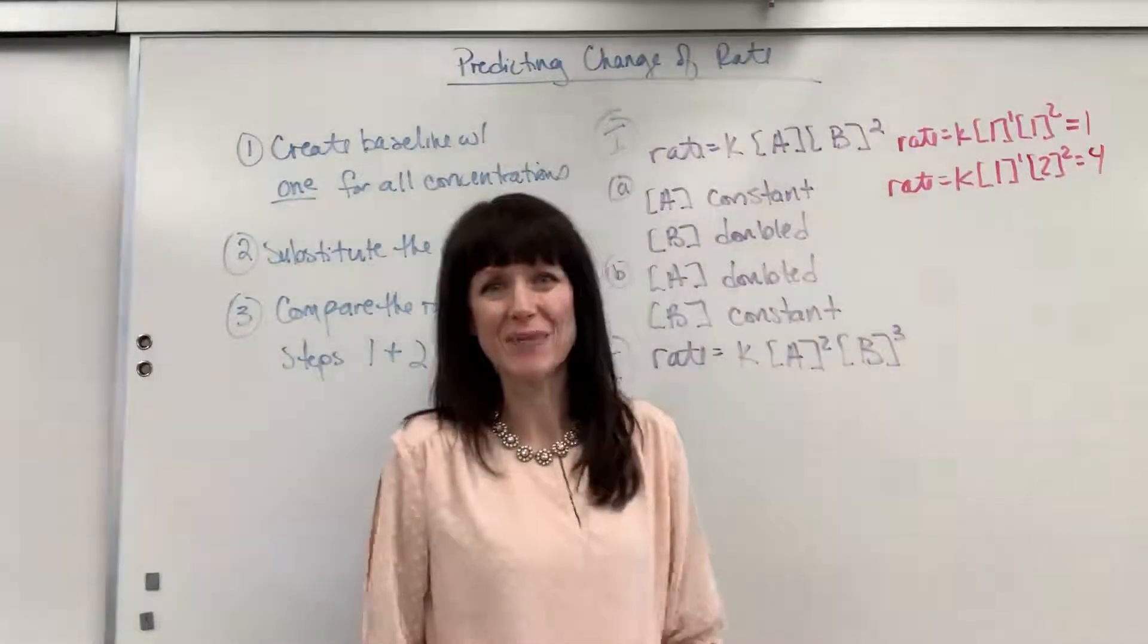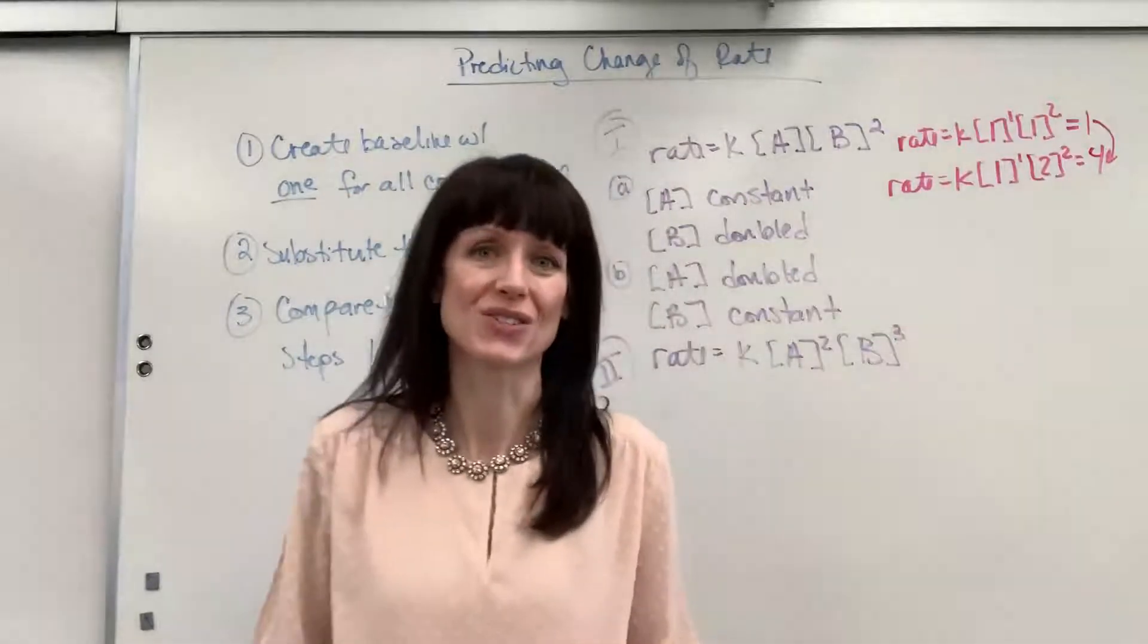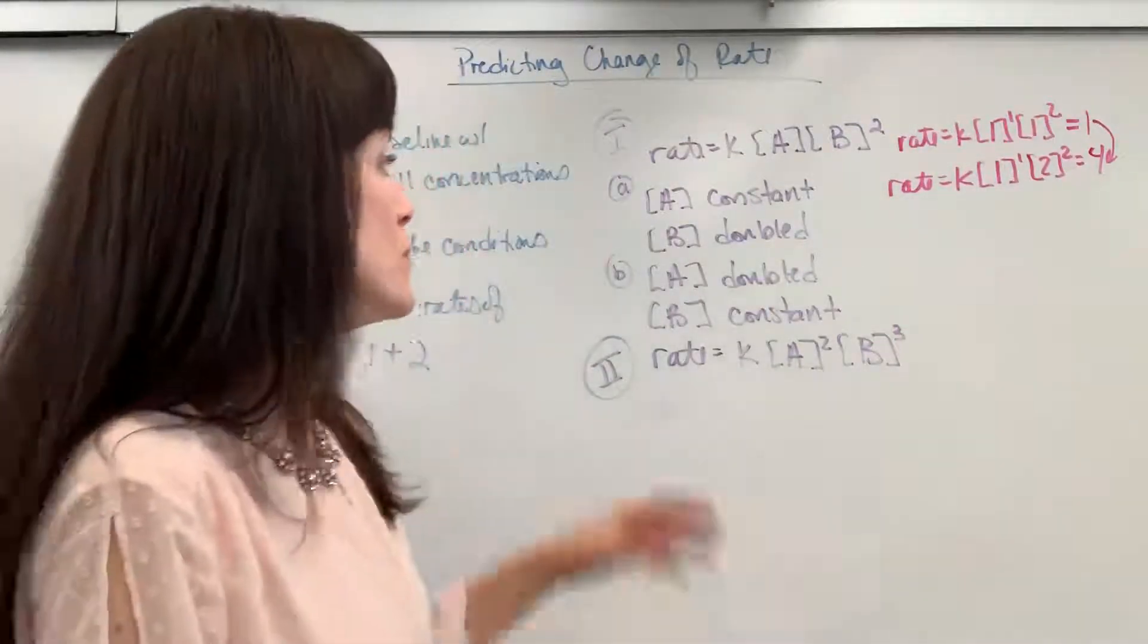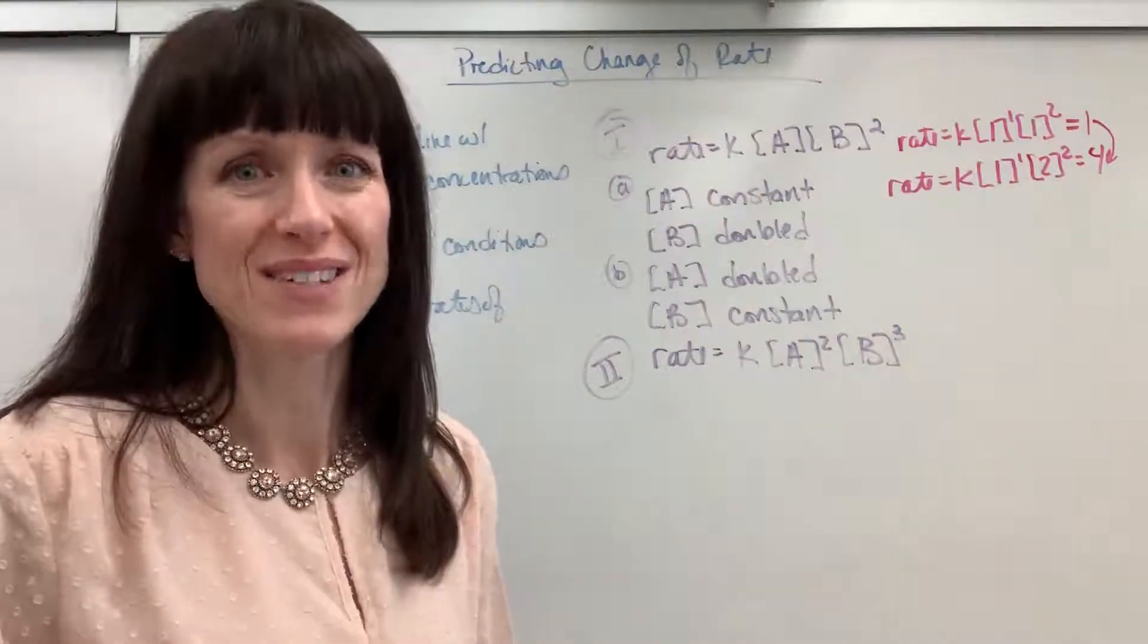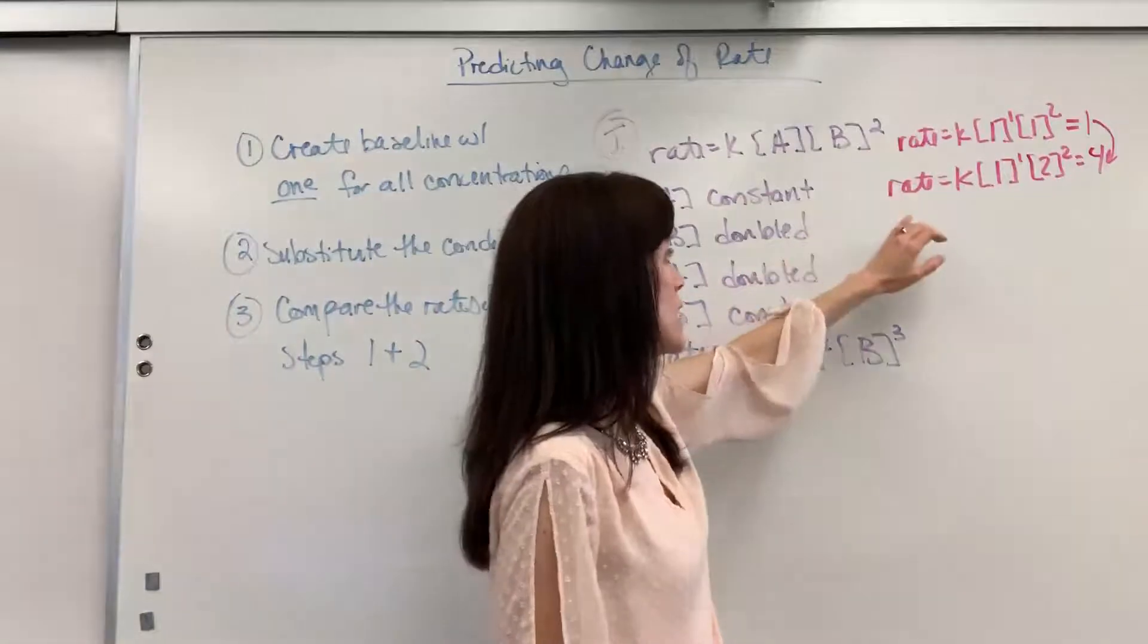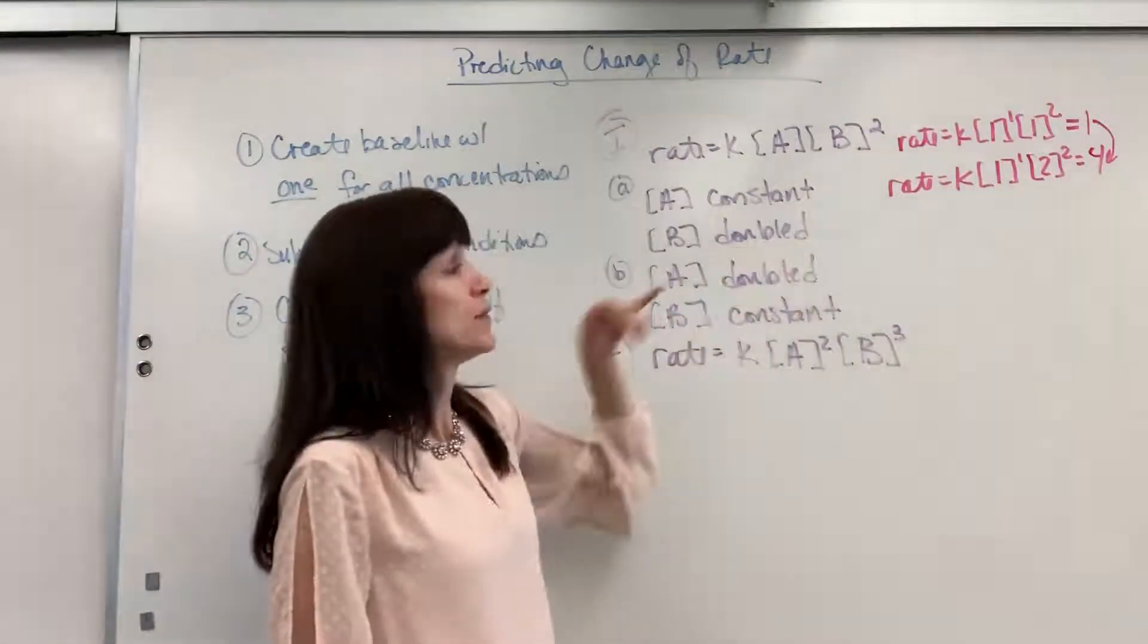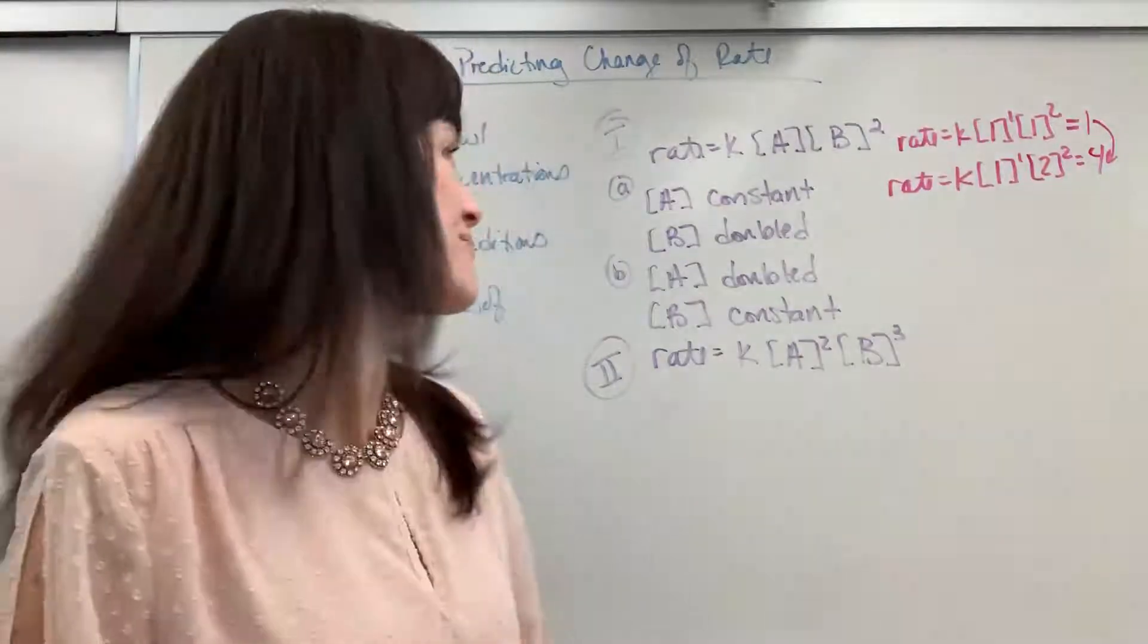So now we can make our prediction. It is going to go 4 times faster. It will quadruple. If you double B and hold A constant, the rate will go 4 times faster. And if they happen to give you the initial rate, all you'd have to do is multiply it by 4 if you doubled B, and that's because you know that the rate will go 4 times faster.